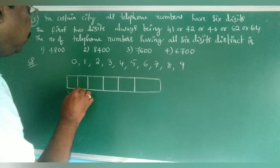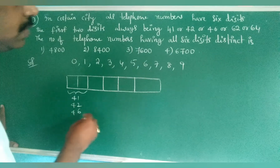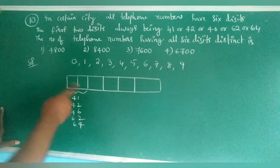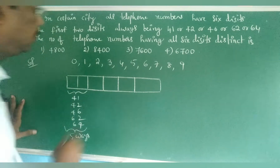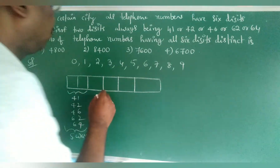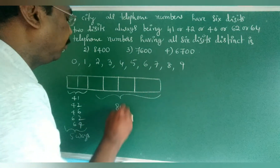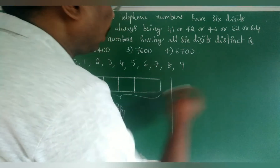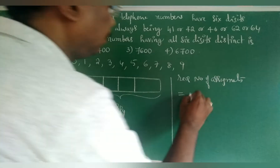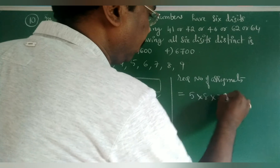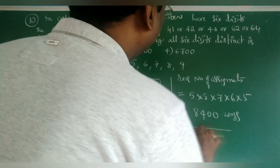The first 2 digits can be: 41, 42, 46, 62, or 64 — so the first 2 places can be filled in 5 ways. The remaining 8 digits fill the remaining 4 places in 8P4 ways. Therefore the total required number of arrangements = 5 × 8P4 = 5 × (8 × 7 × 6 × 5) = 8400 ways.